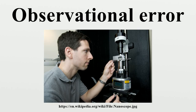Systematic error is sometimes called statistical bias. It may often be reduced by very carefully standardized procedures. Part of the education in every science is how to use the standard instruments of the discipline. The random error is due to factors which we cannot control. It may be too expensive, or we may be too ignorant of these factors to control them each time we measure. It may even be that whatever we are trying to measure is changing in time, or is fundamentally probabilistic.